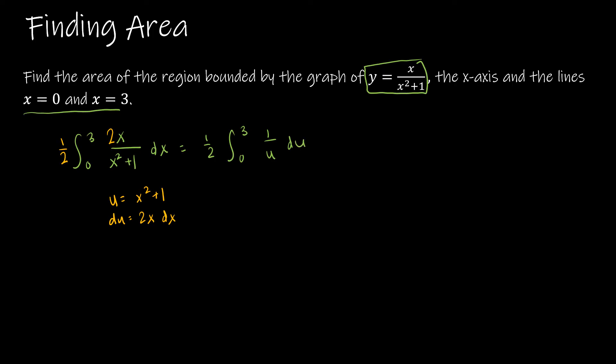Now, just as before, we can keep the integral integrated from 0 to 3, and when we're done integrating, replace u with x squared plus 1, which is what u is. Or I can change those limits of integration. So I can find u of 0, which would be 1, and u of 3, which would be 10.